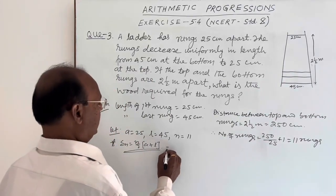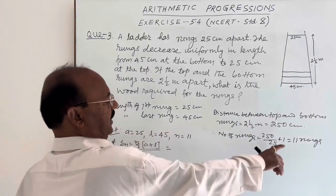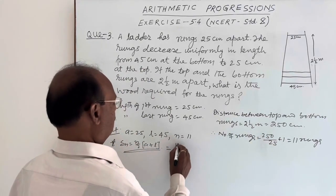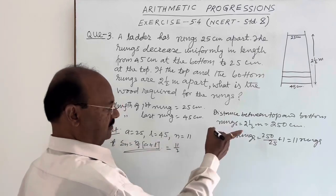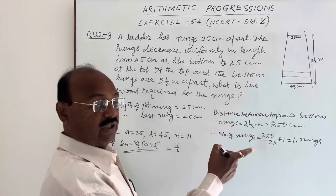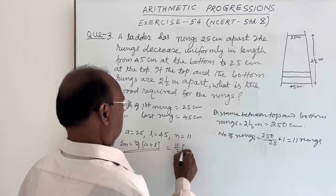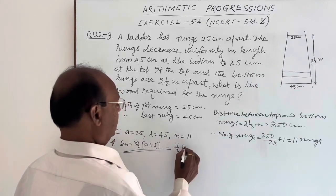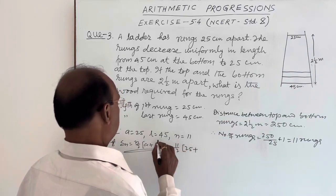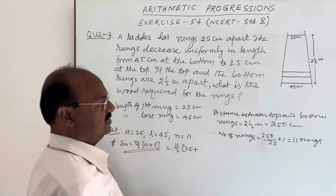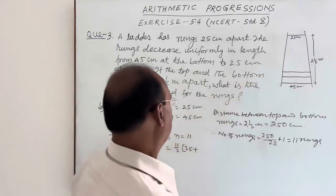We can get result very easily. n by 2, n is 11, so 11 by 2. n means number of rungs. This is going to a plus l, a is 25 plus l means, last term means this bottom rung is 45.